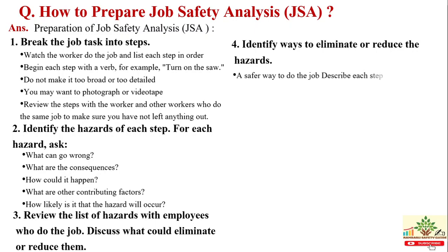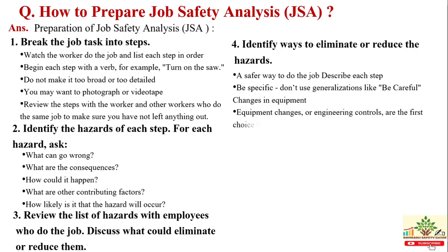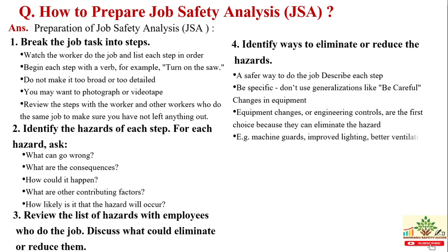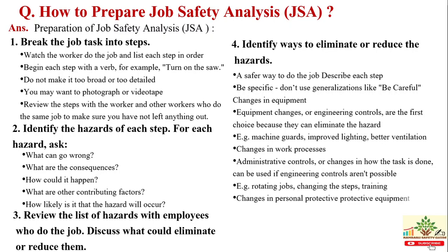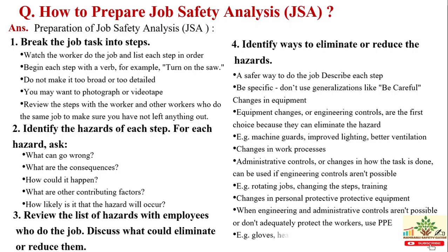Discuss each step and be specific — do not use vague language like 'Be careful.' Engineering controls are the first choice because they can eliminate the hazard. Examples include machine guards, improving lighting, and better ventilation. Administrative controls — changes in how a task is done — can be used when engineering controls are not possible. Examples include rotating jobs, changing steps, and training. When engineering and administrative controls are not possible or do not adequately protect the worker, use PPE — personal protective equipment.